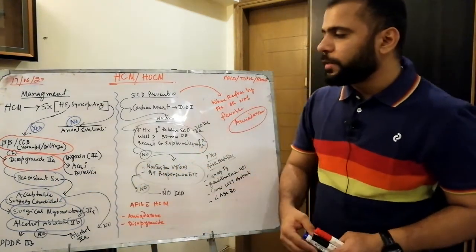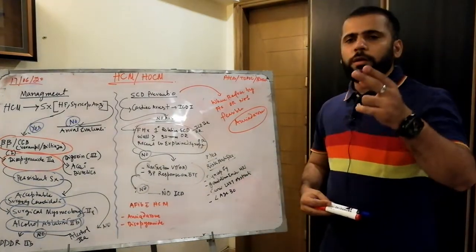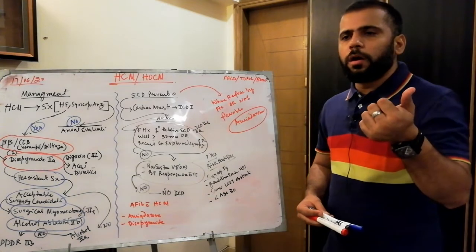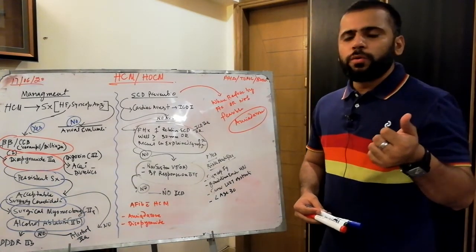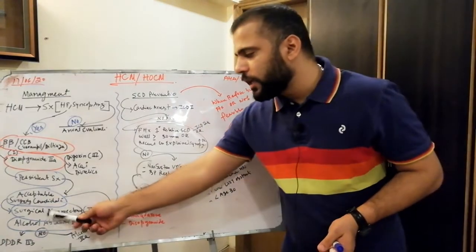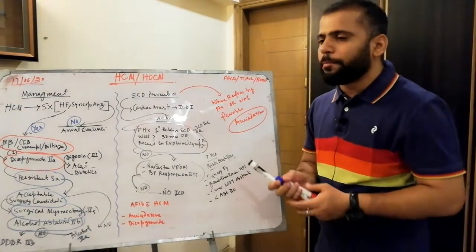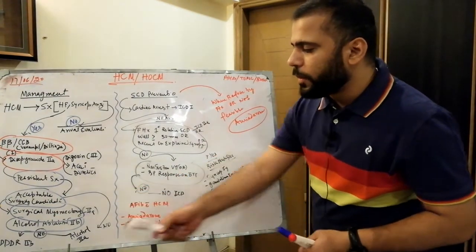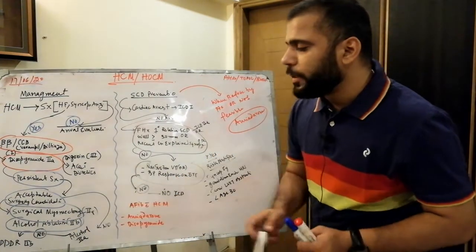If your patient has persistent symptoms despite medical therapy, assess whether they are an acceptable surgical candidate. If there is no contraindication to cardiac surgery, surgical myomectomy is class 2A and is preferred over alcohol septal ablation.